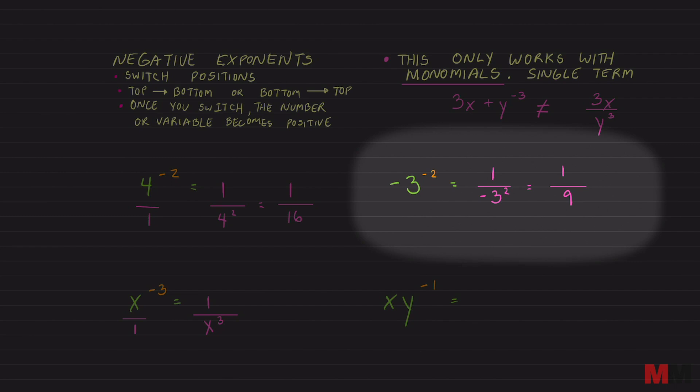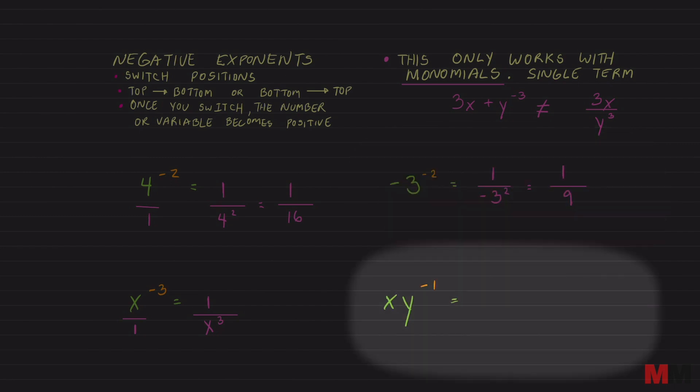What if you got two variables and only one of them has a negative exponent? You only move the ones with a negative exponent. So that x is technically on the top. It doesn't have a negative exponent. We're gonna leave it on the top. However, the y does, so we're gonna have to move that from top to bottom. We're gonna write the y down here and it will now be a 1, which is the same thing as x over y.